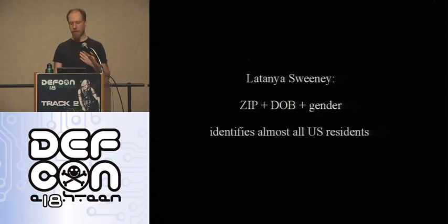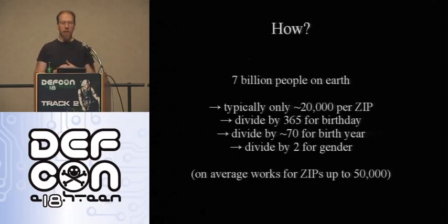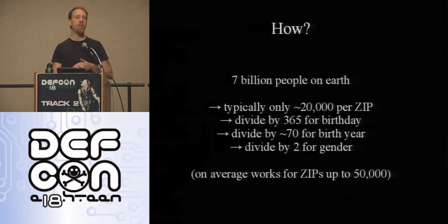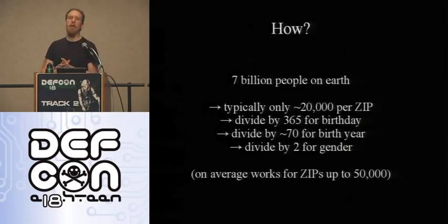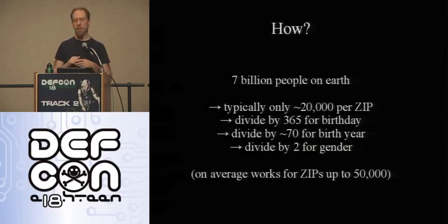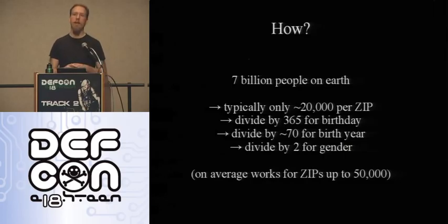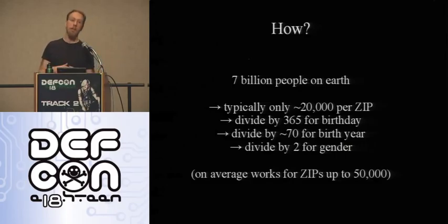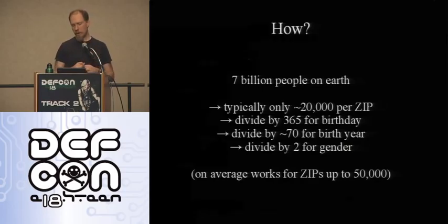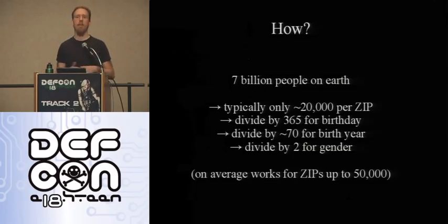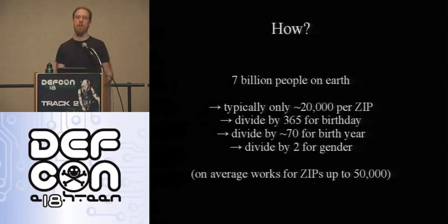That's counterintuitive, so let's see how it happens. Starting with 7 billion people on Earth, you rapidly narrow down if you know a zip code to about 20,000 to 50,000 people. Then you divide by 365 because you know their birth date, divide by about 70 because you know their age, and then divide in half because you know whether they're male or female. If the zip code had fewer than 50,000 people, you probably have a unique person.